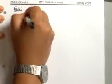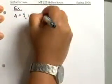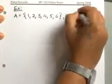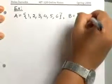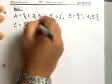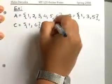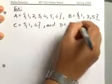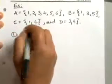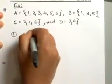Let's look at an example using the same sets as before. Set A has six elements: 1, 2, 3, 4, 5, and 6. Set B has elements 1, 3, and 5. Set C has elements 1 and 6. And set D has the element 4.